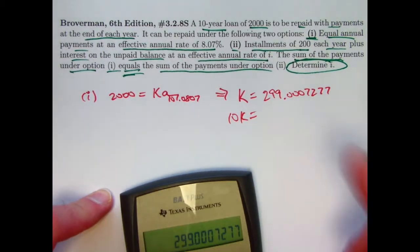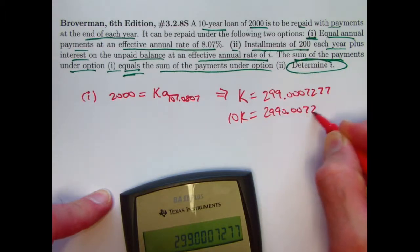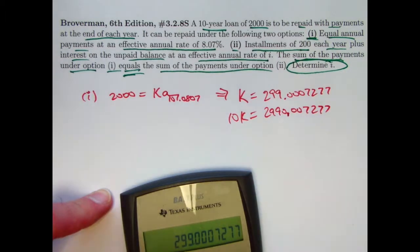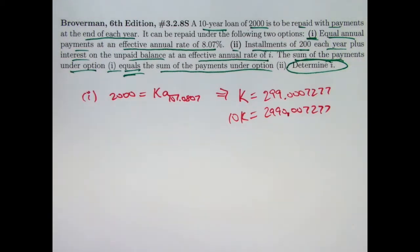And that's the value of K. So 10K is going to be 10 times that, 2,990. That's going to be 10K, the sum of all the payments. We want that to be the same for option 2.